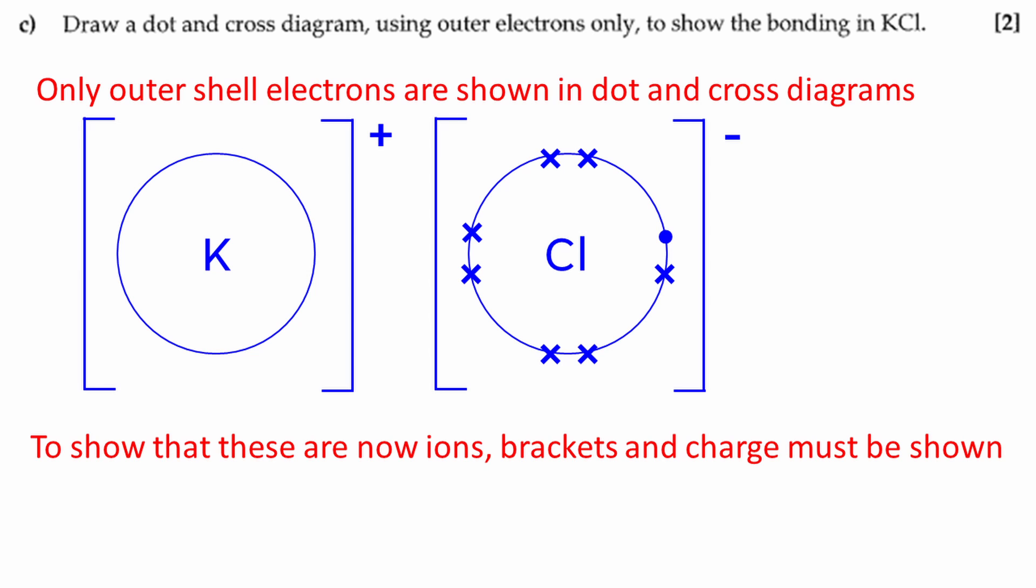The dot and cross diagram shows that the electron from potassium, the dot, has been transferred to the chloride ion. Potassium has a positive charge because it has lost an electron. Chlorine has gained an electron so it has a negative charge. You have to use square brackets with a charge outside of the brackets on the top right.